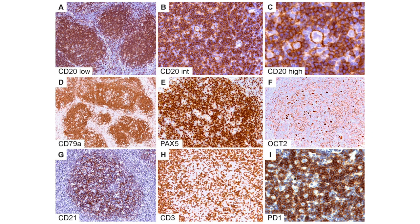Returning to immunophenotyping of nodular lymphocyte predominant Hodgkin lymphoma: in figure A, CD20 highlights numerous classic lymphoid nodules. Figures B and C show scattered LP cells residing within the nodules, containing a microenvironment rich in small B lymphocytes. Figure D shows CD79A, and figure E shows PAX-5. OCT2 is another B cell marker expressed in NLPHL with bright nuclear staining, similar to BOB1. Both OCT2 and BOB1 are positive.